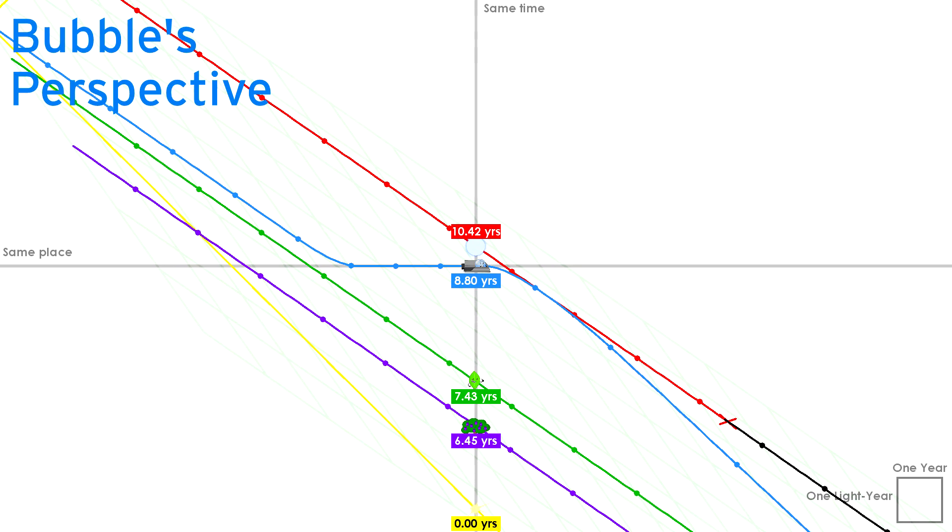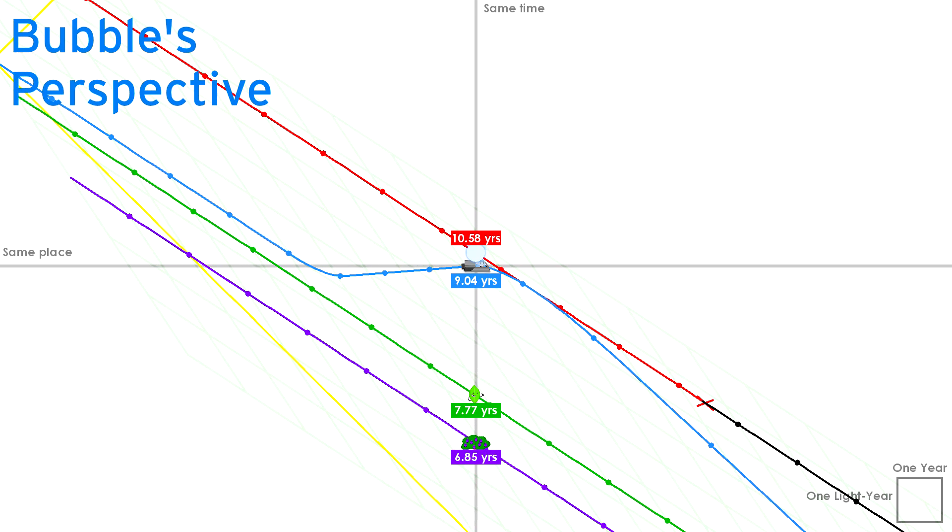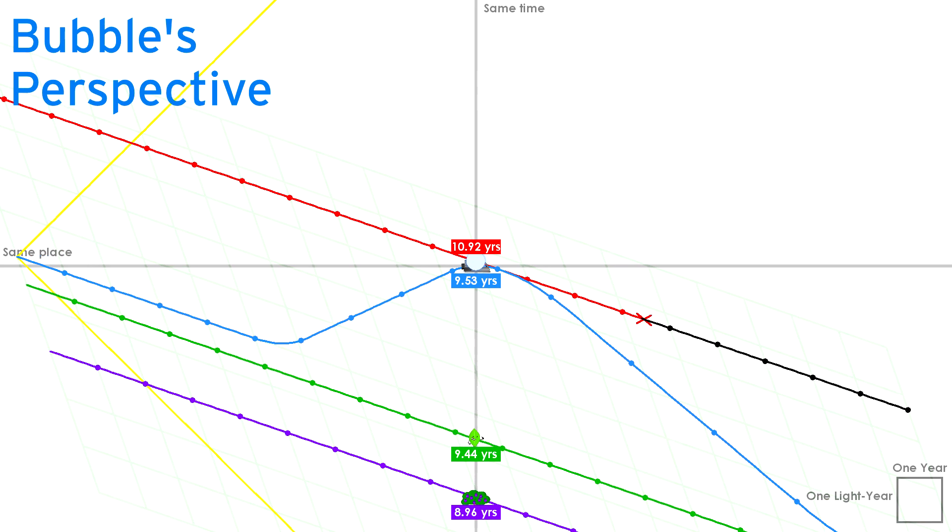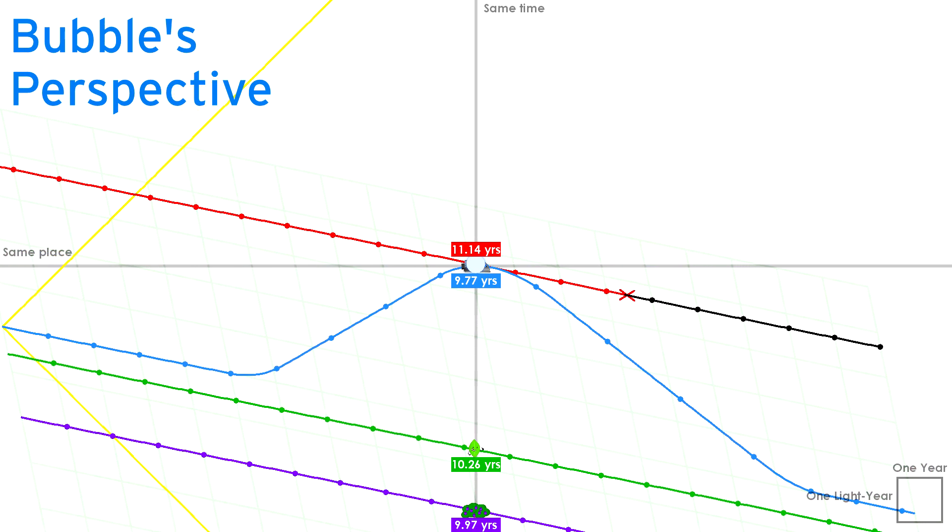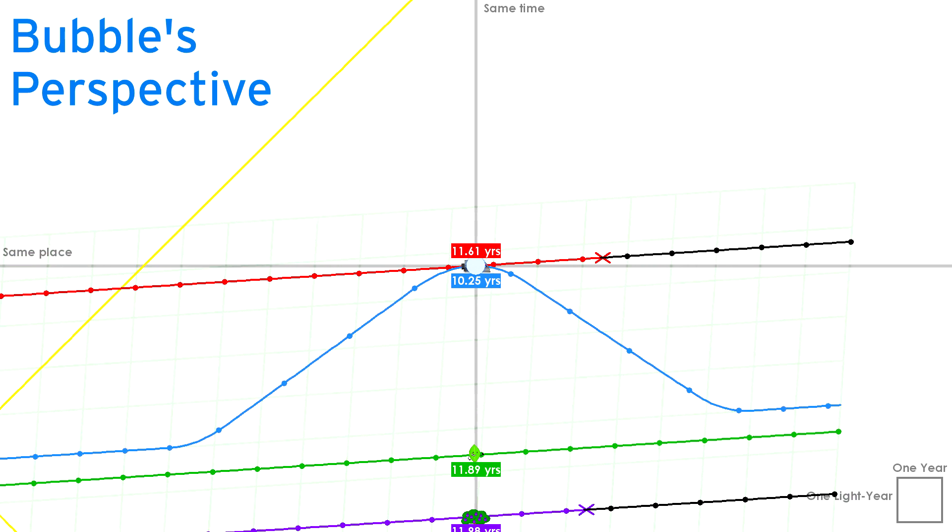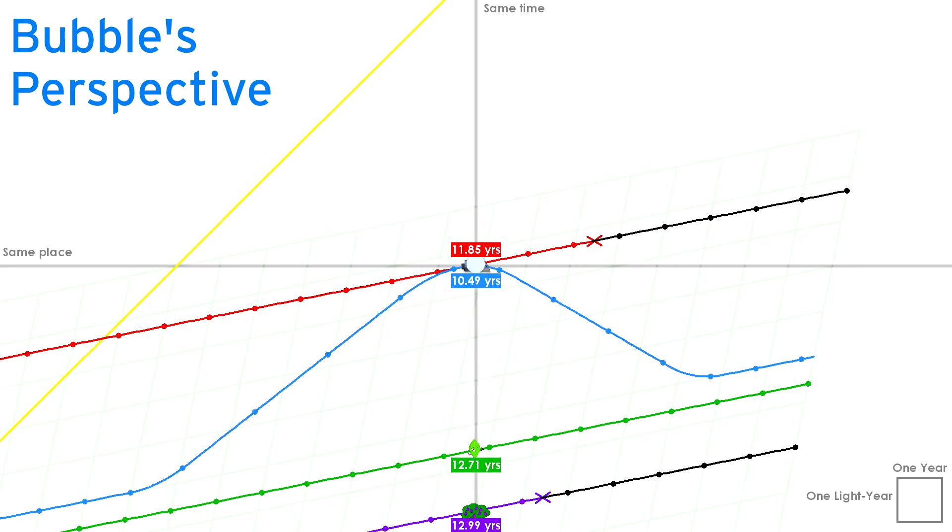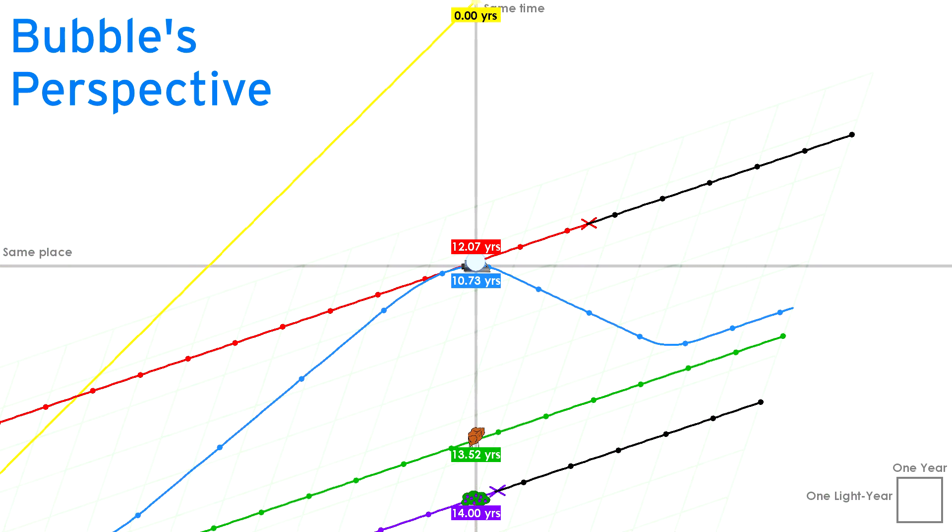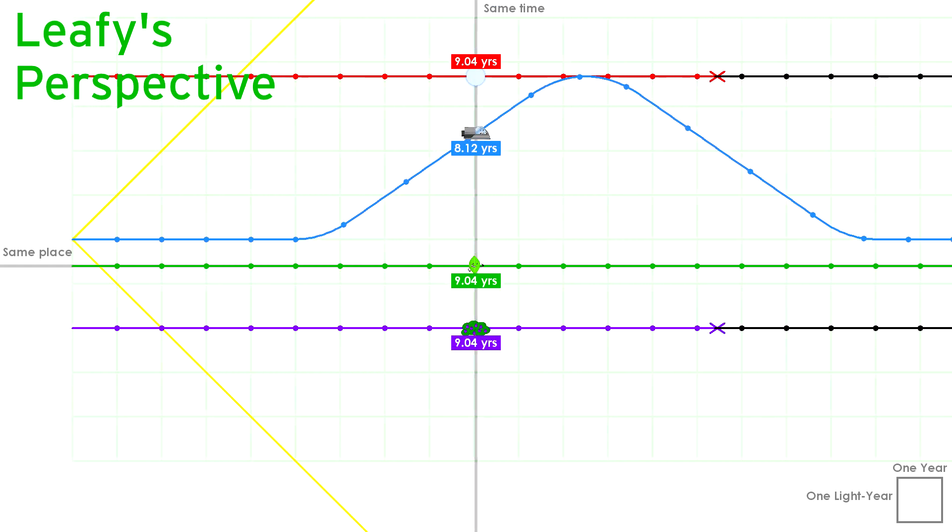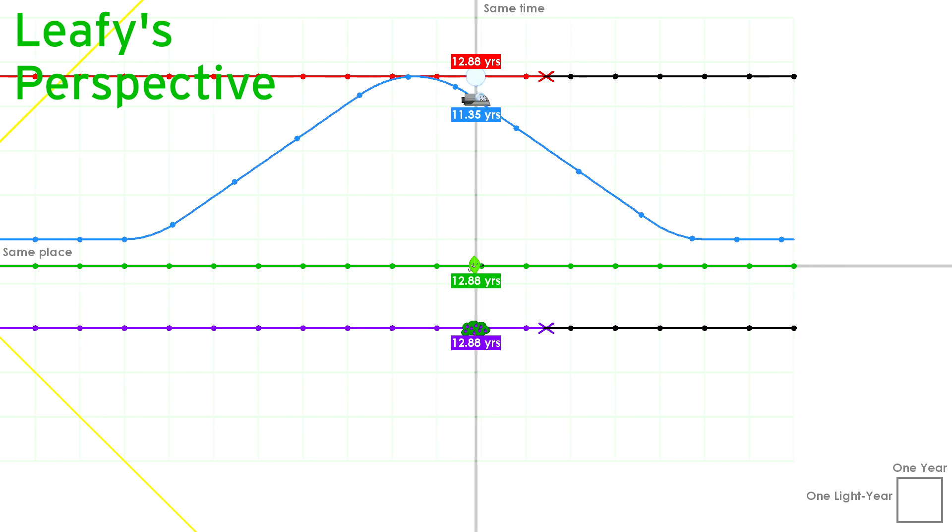Watch what this acceleration does to Bubble's view during her turnaround. As Bubble turns around, her slice of the universe rotates through space-time, giving her a different frame of reference. This doesn't happen to Leafy. As Bubble decelerates, she sees Leafy rapidly age, several times faster than herself. Note that Leafy will never see her equivalent of that, of Bubble rapidly aging. That's because Leafy never accelerates.